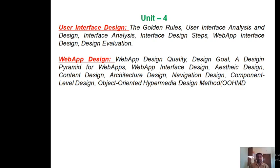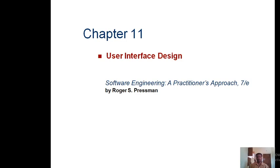Good morning. According to our software engineering syllabus, we are discussing the fourth unit. In the fourth unit we have two chapters: user interface design and web app design. We already completed the first chapter, and before entering into the second chapter, we will revise at a glance what are the concepts in the first chapter. The first chapter contains six concepts: the golden rules, user interface analysis and design, interface analysis, interface design steps, web app interface design, and design evolution. In this revision class we are discussing the first chapter, which is discussed in the 11th chapter of your textbook.